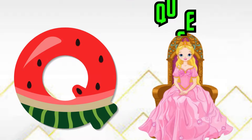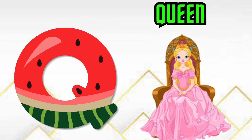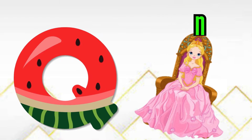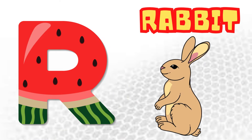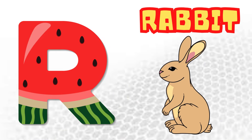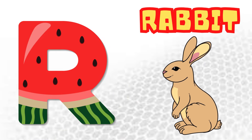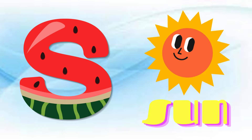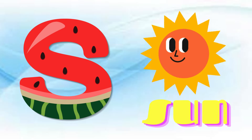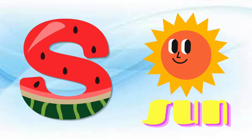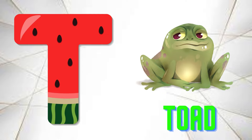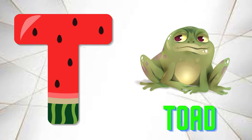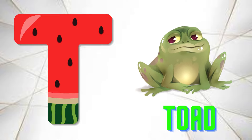Q is for Queen, Q-Q-Queen. R is for Rabbit, R-R-R-Rabbit. S is for Sun, S-S-Sun. T is for Toad, T-T-Toad.